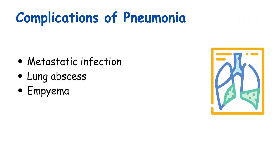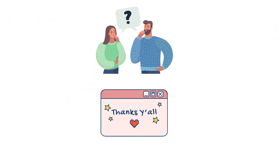Some common complications of community-acquired pneumonia are metastatic infection, lung abscess, and empyema. That's the end of today's review on pneumonia. If you have questions or suggestions, please mention them in the comment section, and have a nice day.